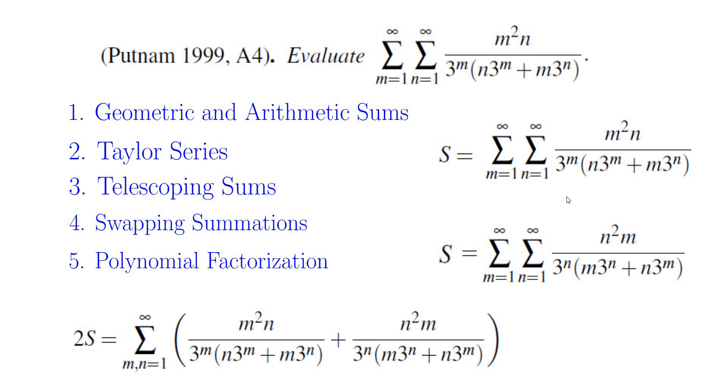Now what we notice is that in the denominator n times 3 to the power of m times m times 3 to the power of n is the same as m times 3 to the power of n plus n times 3 to the power of m. So this is nice because I can easily take the common denominator.